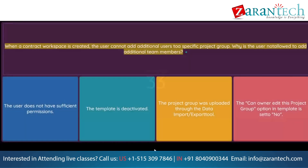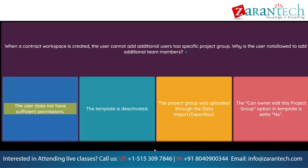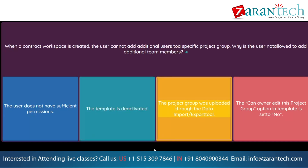Question: When a contract workspace is created, the user cannot add additional users to a specific project group. Why is the user not allowed to add additional team members? Option 1: The user does not have sufficient permissions. Option 2: The template is deactivated. Option 3: The project group was uploaded through the data import/export tool. Option 4: The 'can owner edit this project group' option in the template is set to no.